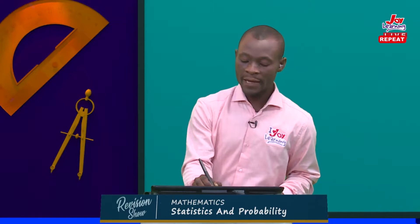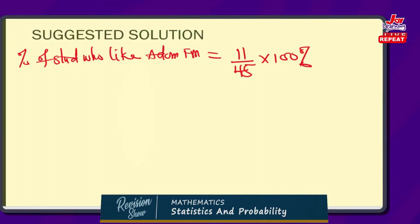So the percentage of students who said they prefer Adom FM: from the data, the number who said they like Adom FM were 11. So we get 11 out of the total which was 45, and we express this as a percentage. That means we simplify 11 over 45 times 100%. Let's see how we can go about that.